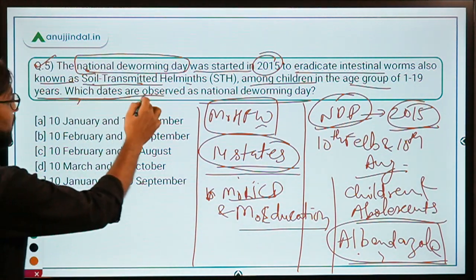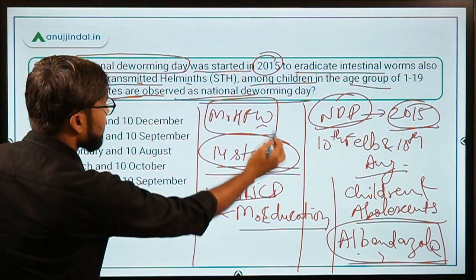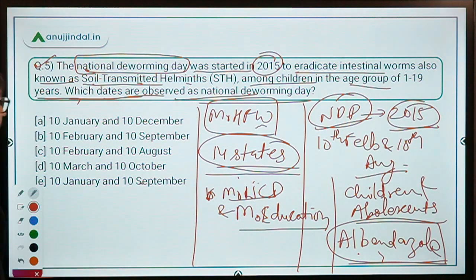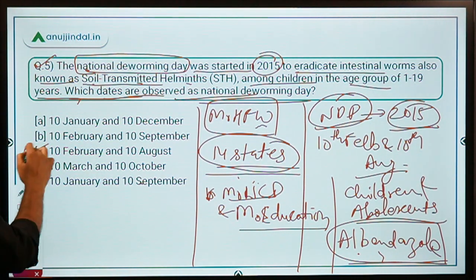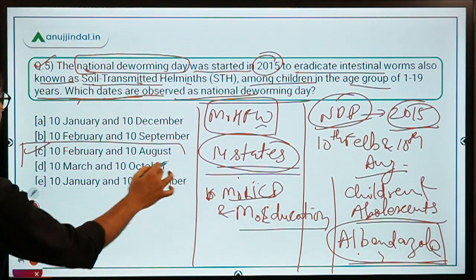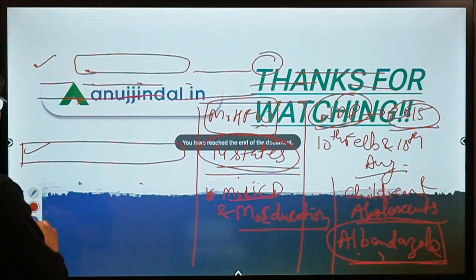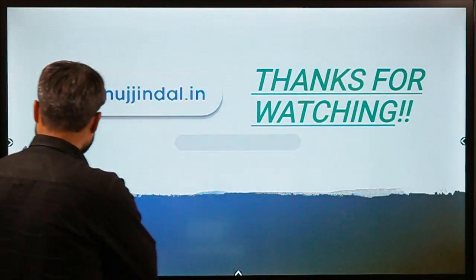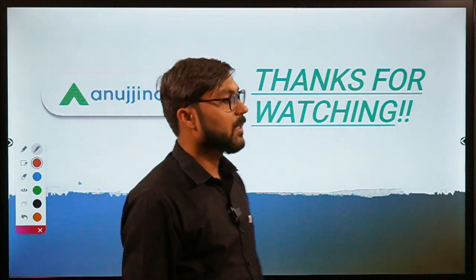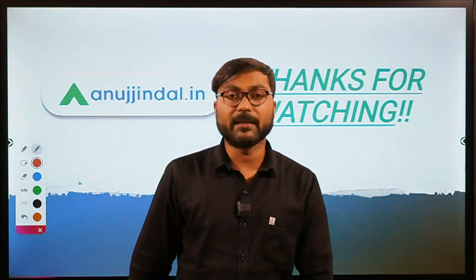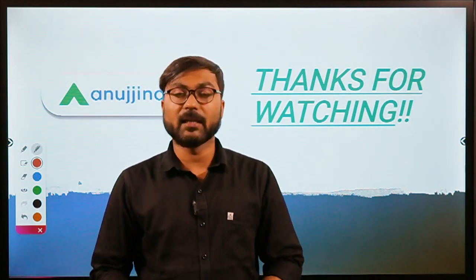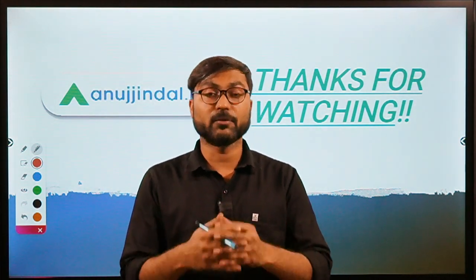The question asks which dates are observed as National Deworming Day. The dates are 10th February and 10th August, which means option C is the correct answer. That's it for the session. I hope you found it useful and if you have any doubts you can ask in the comment section.